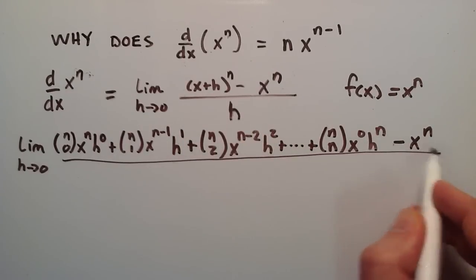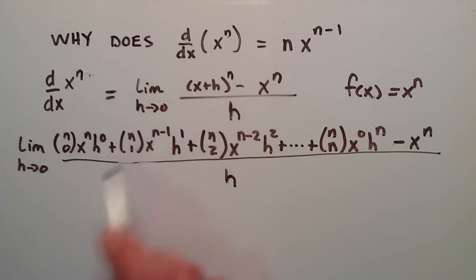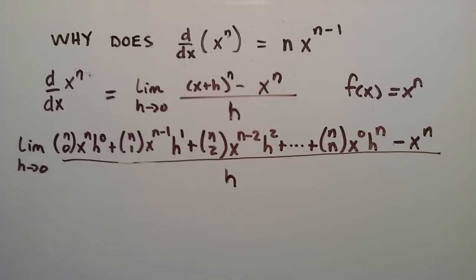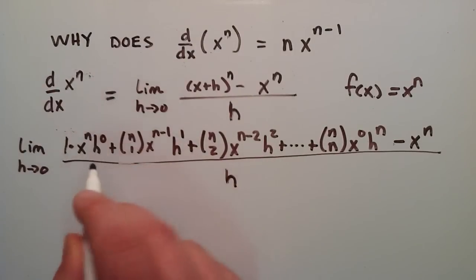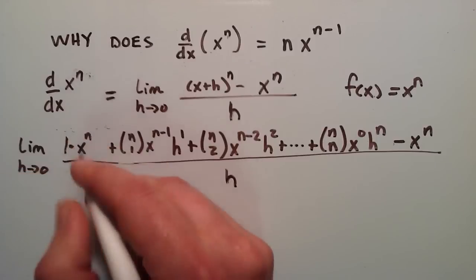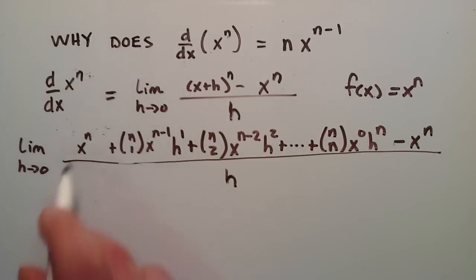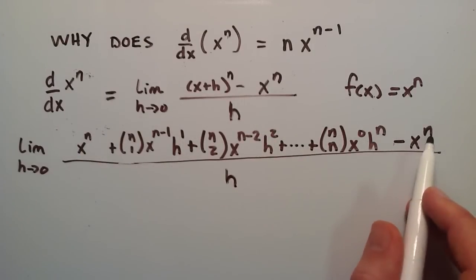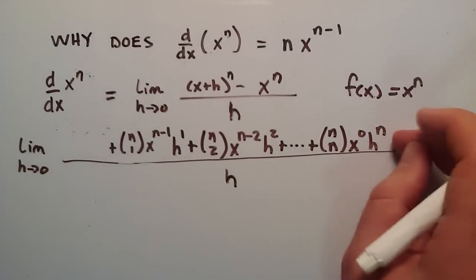Now we simply need to divide all of this by h. Let's simplify some of these terms. The combination n choose 0 is simply equal to 1, and h to the 0 is also equal to 1, so this first term becomes 1 times x to the n times 1, which is just x to the n. Now looking at this first term and the last term in the numerator, we have a positive x to the n and a negative x to the n, so x to the n minus x to the n equals 0 — these two cancel.